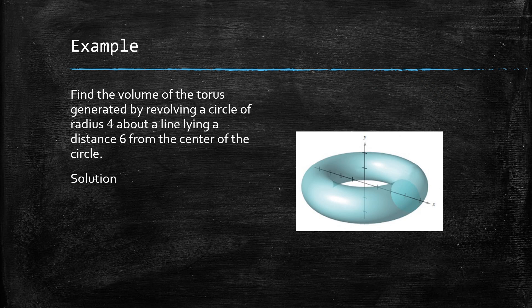So it says if we find the volume of the torus generated by revolving a circle of radius 4 about a line lying a distance 6 from the center of the circle. Then the first thing is to find the area of that circle that we're going to be revolving about that line. Now remember the formula for the area of a circle is pi times R squared, which in this case would be pi times 4 squared, which would be 16 pi.